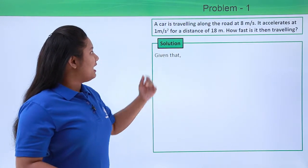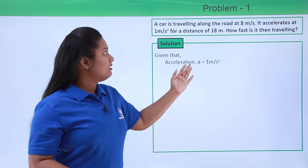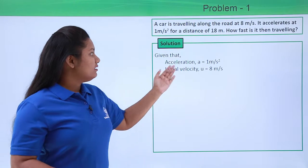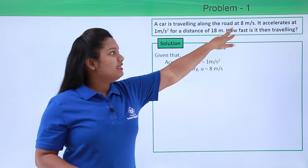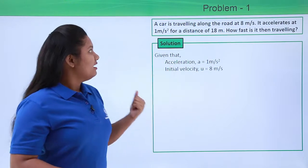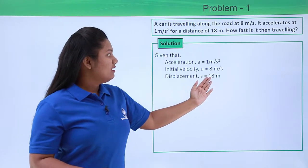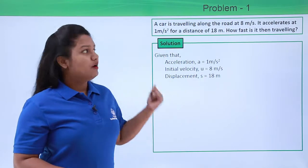Here, the acceleration of the vehicle is given to be 1 meter per second squared, and the initial velocity is given to be 8 meters per second, and the distance is also given, which is 18 meters.